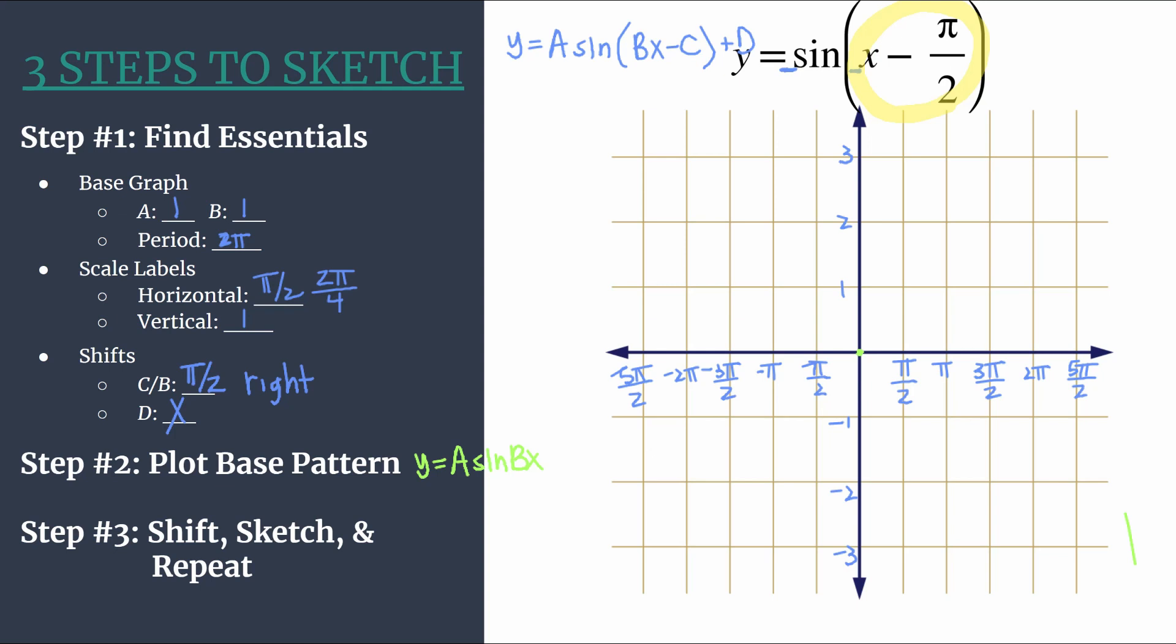We'll do a maximum at the first horizontal tick mark to the right and its y-coordinate is the value of A so it's one. Then we'll have another zero at the second horizontal tick mark. We'll have a minimum at the third horizontal tick mark. Its y-coordinate's value will be the opposite of A so negative one.